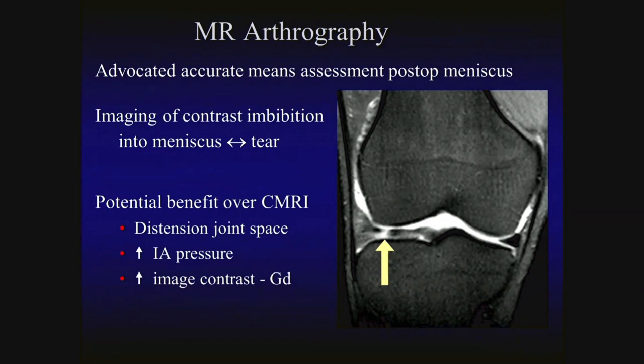Because of the problems that initial MR imaging investigations had with conventional MRI in the assessment of the postoperative meniscus, some investigators advocated the use of MR arthrography as a more accurate means of assessment of the postoperative meniscus. With MR arthrography, there is introduction of contrast material into the articulation.